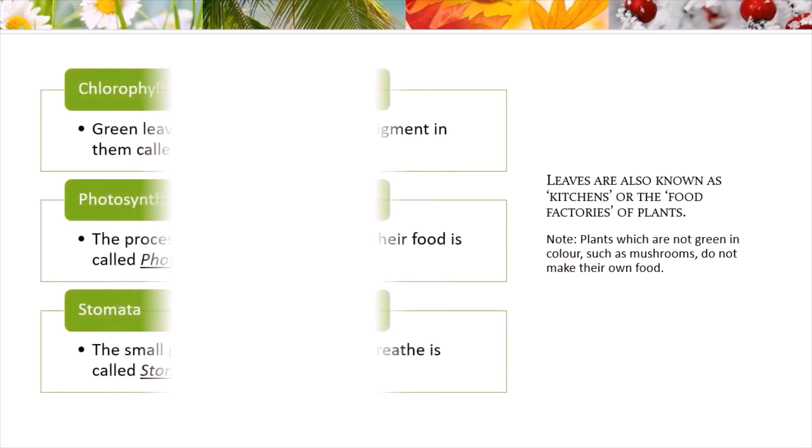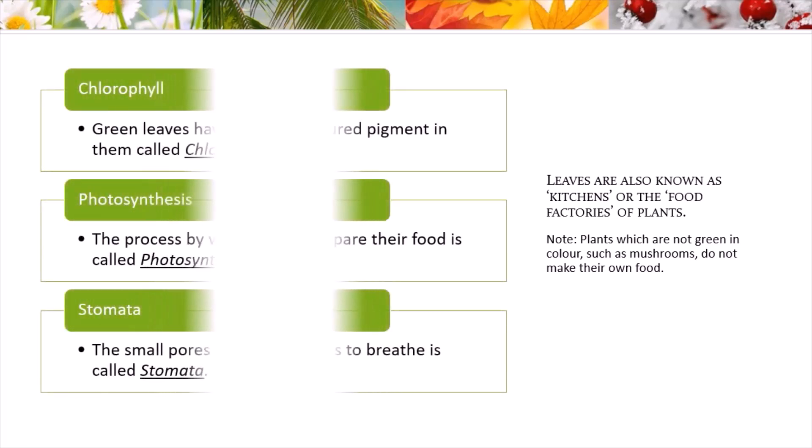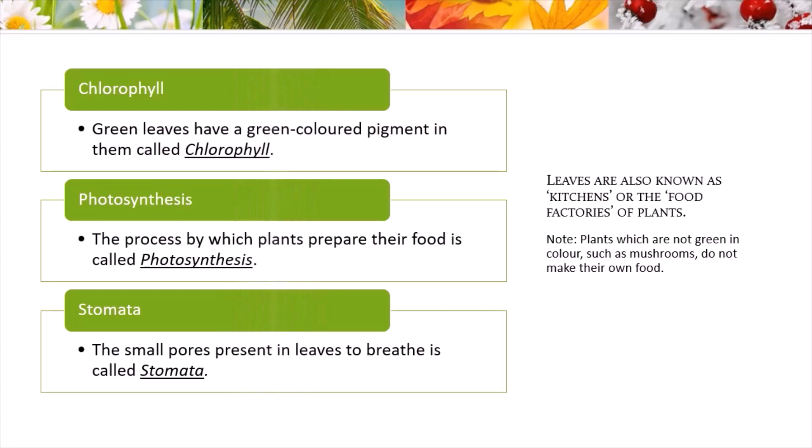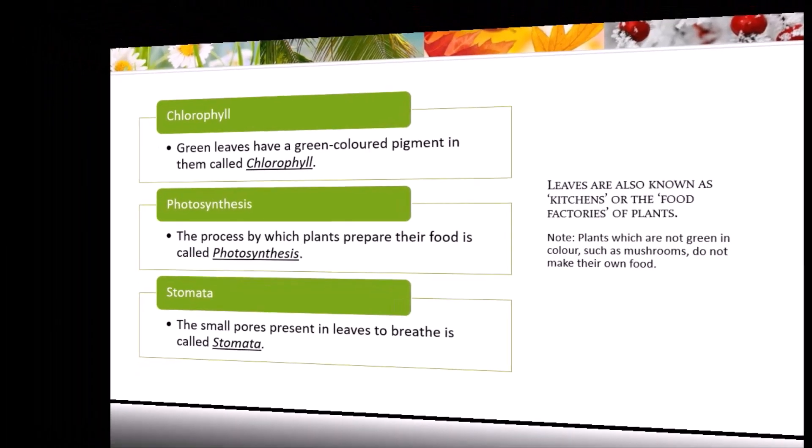Let us summarize what we learned so far. Green leaves have a green-colored pigment called chlorophyll. Plants prepare their food through a process called photosynthesis. There are also small pores present in the leaves which help in breathing, and these are called stomata.